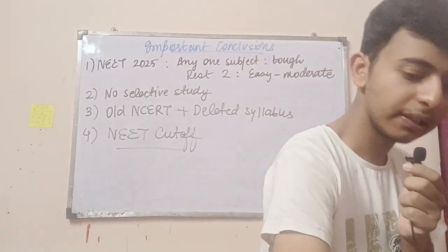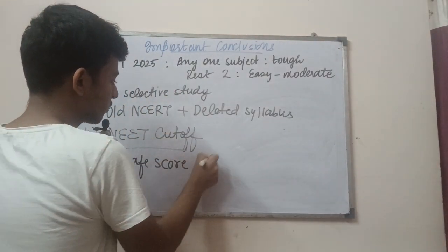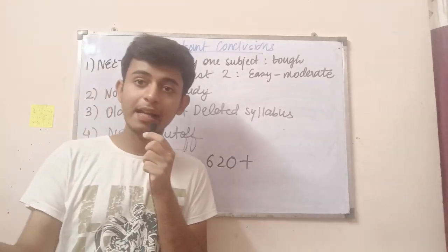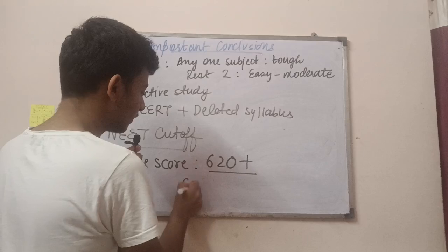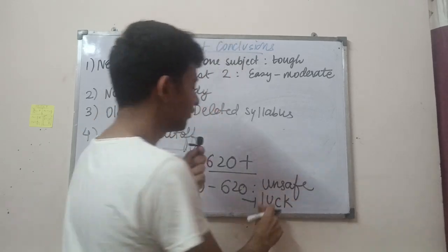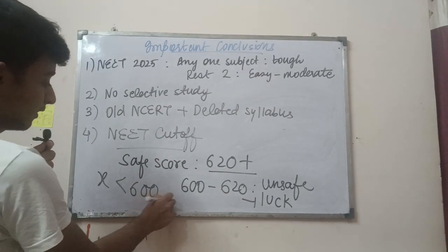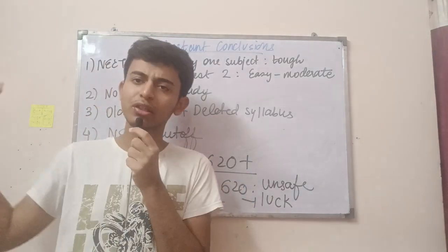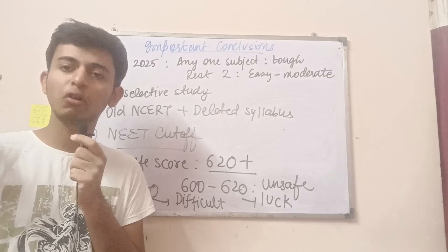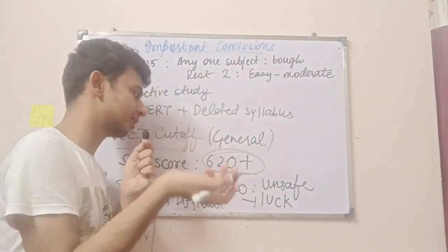Talking about the NEET cutoff — as per last year's trend analysis, the safe score is 620 plus for the general category, and it also depends on your state and rank at 620 marks. Anything between 600 to 620 is a little unsafe — it depends on luck whether you'll get a college. For students who scored less than 600 in the general category, it is difficult. For other category students, you can subtract around 40–50 marks depending on your category. So 620 plus is a good score.